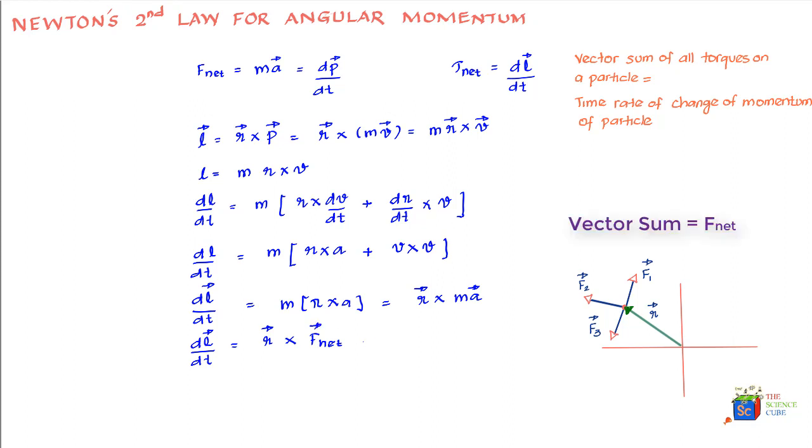Because M into A is nothing but the net force on the particle, which can be rewritten in a simpler way as sigma of R vector with vector F. This is nothing but the summation of R with various forces acting on the particle, and we will suddenly realize that R cross F is nothing but torque.